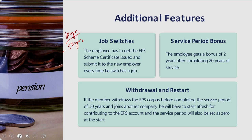Regarding job switches, the employee has to get the EPS scheme certificate issued and submit it to the new employer every time he switches jobs — this is mandatory. The employee also gets a bonus of 2 years after completing 20 years of service. If the member withdraws the EPS corpus before completing 10 years of service and joins another company, he will have to start afresh contributing to the EPS account, and the service period will be reset to zero.